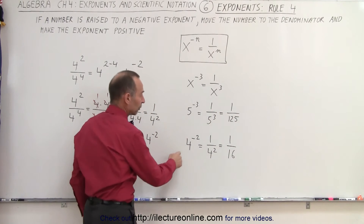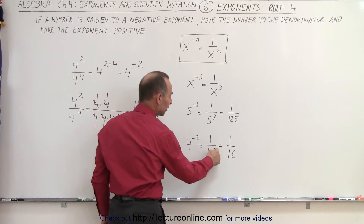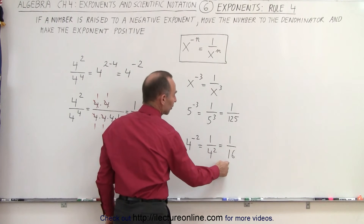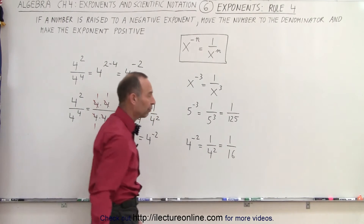Or, 4 to the negative 2 is equal to 1 over 4 to the positive 2, which is equal to 1 over 16, because 4 squared is 4 times 4.